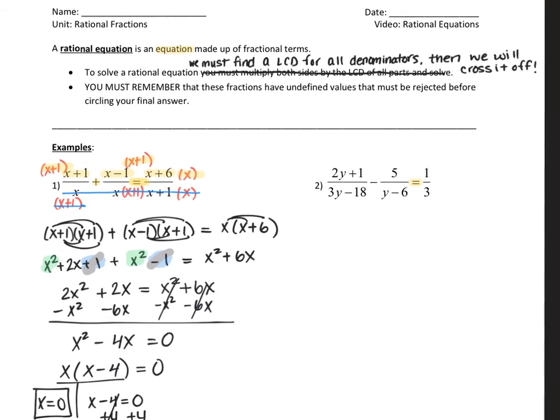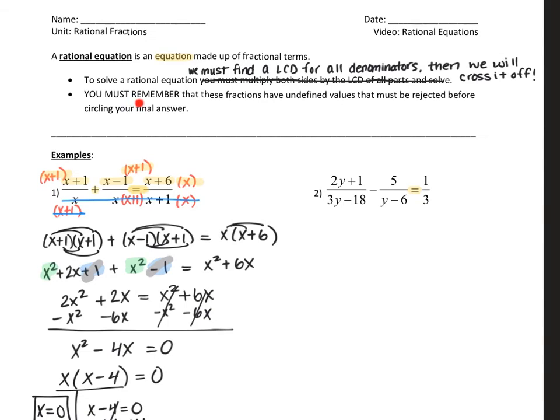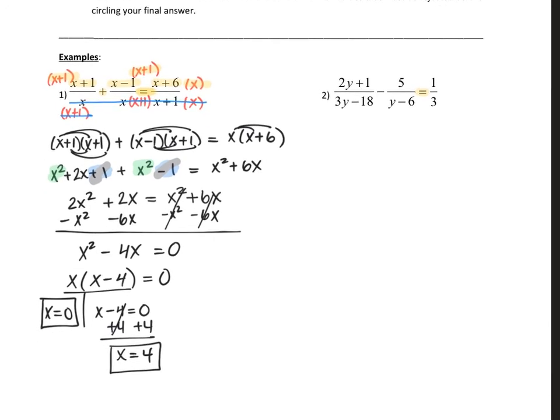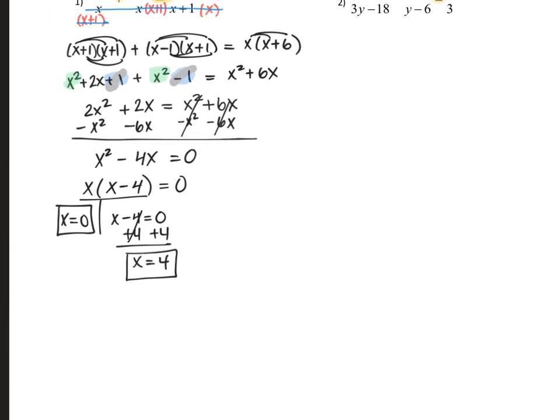Now, before I had mentioned something about checking for undefined values. So that's something that we want to look for. So remember, an undefined value makes a fraction equal to zero on the bottom. So here's one fraction, here's another fraction, and here's a third fraction. Here are the three denominators that we care about. So we're going to set each of the denominators equal to zero. And that will figure out our undefined values. So undefined values, we're going to set each of the denominators equal to zero.